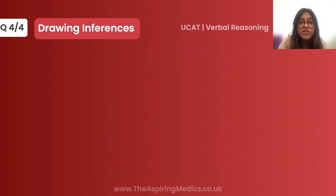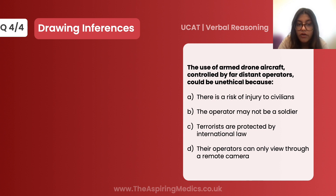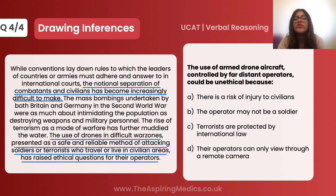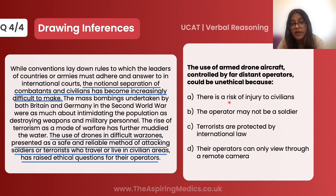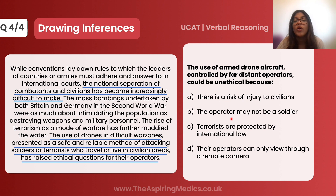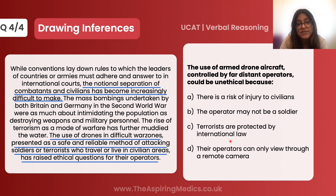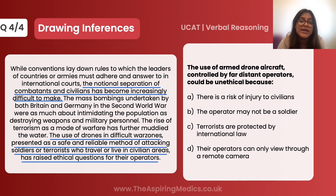The last question is: the use of armed drone aircraft controlled by far distant operators could be unethical because — let's go through the answer choices. Option A: there's a risk of injury to civilians — obviously true. Option B: the operator may not be a soldier — that doesn't necessarily make it unethical, as a trained drone operator wouldn't need to be a soldier. Option C: terrorists are protected by international law — that's false. Option D: their operators can only view through a remote camera — that doesn't seem unethical. So the correct answer is A.